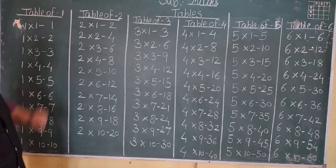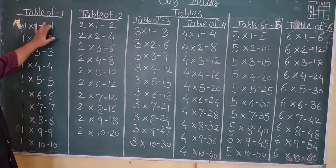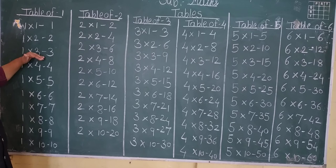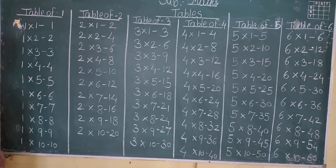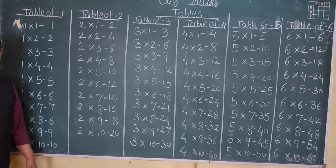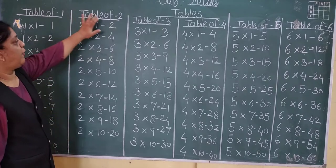Table of 1: 1 one is 1, 1 two is 2, 1 three is 3, 1 four is 4, 1 five is 4, 1 six is 6, 1 seven is 7, 1 eight is 8, 1 nine is 9, 1 ten is 10.